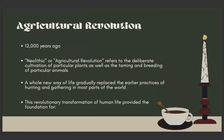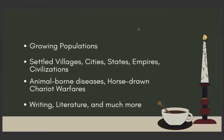First, the Agricultural Revolution. It happened about 2,000 years ago, and the Neolithic or Agricultural Revolution refers to the deliberate cultivation of particular plants as well as the taming and breeding of particular animals. A whole new way of life gradually replaced the earlier practices of hunting and gathering in most parts of the world. This revolutionary transformation of human life provided the foundation for growing populations, settled villages, cities, states, empires, civilizations, animal-borne diseases, horse-drawn chariot warfare, writing, literature, and much more.